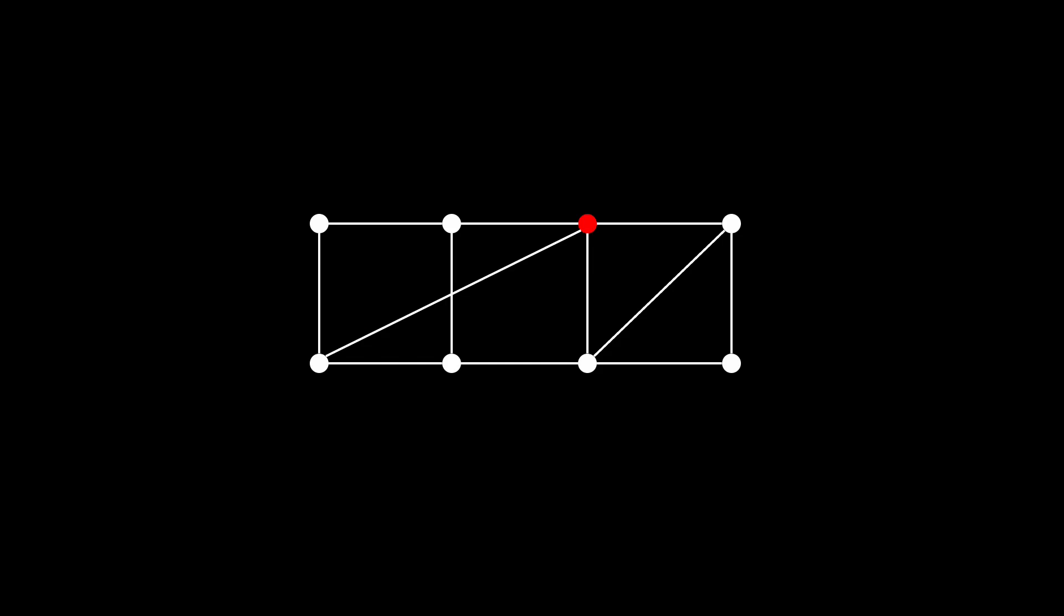Suppose we select this vertex to go into our vertex cover, then all of these green edges are now covered. If we continue adding vertices like this, we might end up with a vertex cover like this. All the edges are now covered with only 5 vertices.